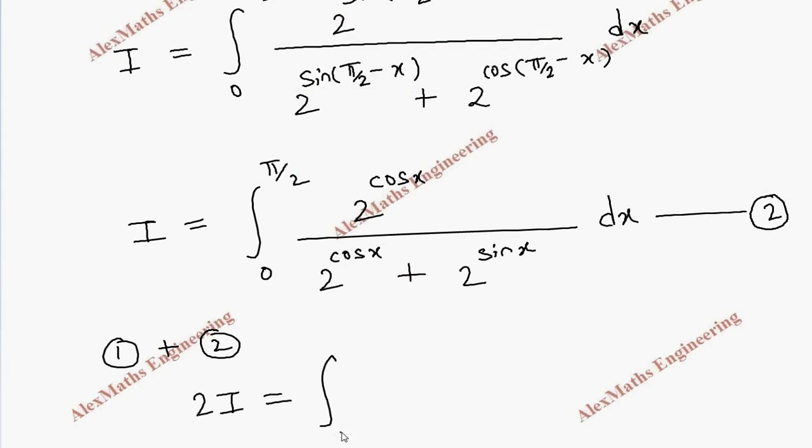2I equals integral 0 to π/2 with common denominator 2^(sin x) plus 2^(cos x). In the numerator we have 2^(sin x) in equation 1 and 2^(cos x) in equation 2, so we combine both numerators.